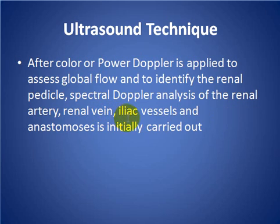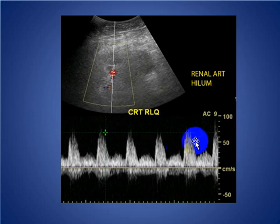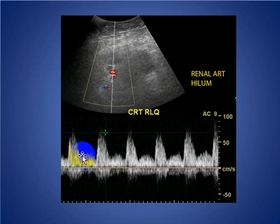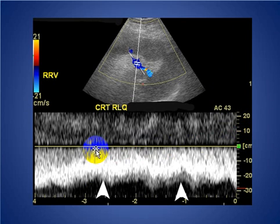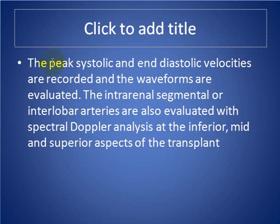After applying color and power Doppler to assess global flow, the renal vessels undergo spectral Doppler analysis of the renal artery, renal vein, and iliac vessels at the anastomosis. Here you can see a normal renal artery spectral Doppler waveform with normal diastolic flow, and the monophasic renal vein is patent. Peak systolic and end-diastolic velocities are recorded and the waveforms are evaluated.